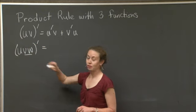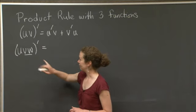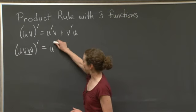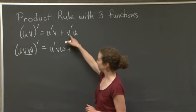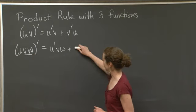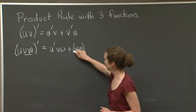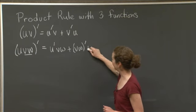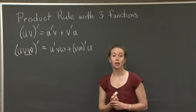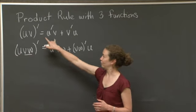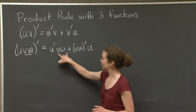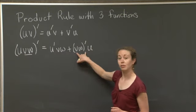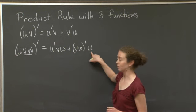So using the product rule for two functions, what I get when I take this derivative is I get u prime times vw plus I take the derivative of the second thing, which is vw prime, and then I leave the u alone. We're not quite done, but you can see now, if we compare to what's above, you take the derivative of the first function, you leave the second function alone. You take the derivative of the second function, you leave the first function alone.